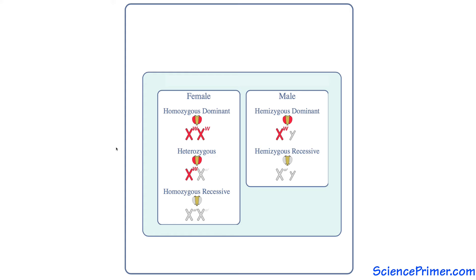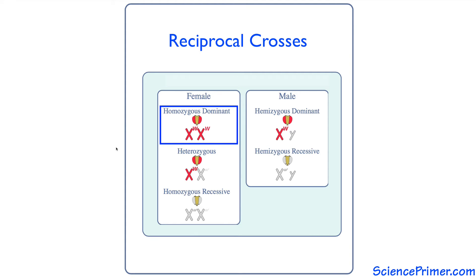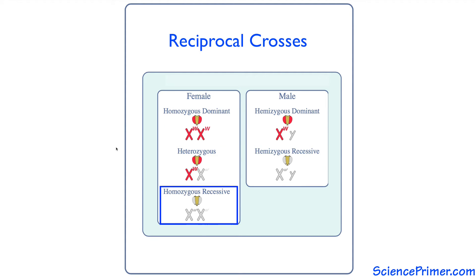The difference between sex-linked inheritance patterns and classic Mendelian patterns can be shown by observing the ratio of male and female red and white-eyed individuals produced with reciprocal crosses. Reciprocal crosses involve crossing true-breeding red and true-breeding white-eyed individuals. Two reciprocal crosses can be performed: a true-breeding red-eyed female with a white-eyed male, and a true-breeding white-eyed female with a red-eyed male.